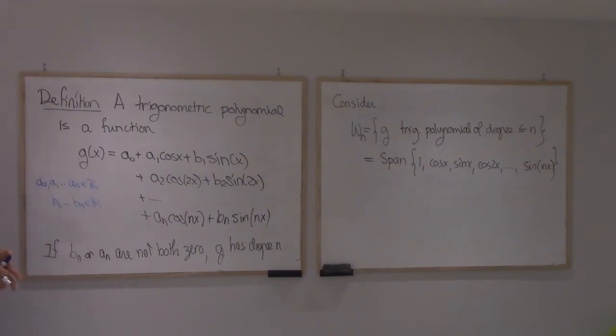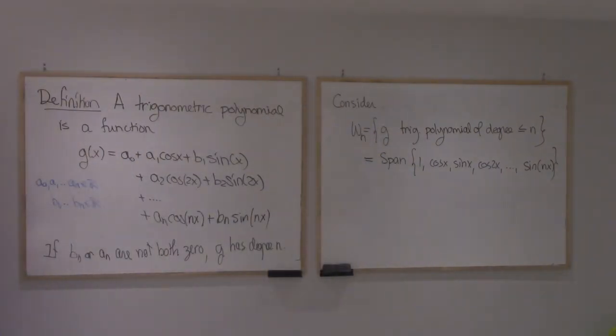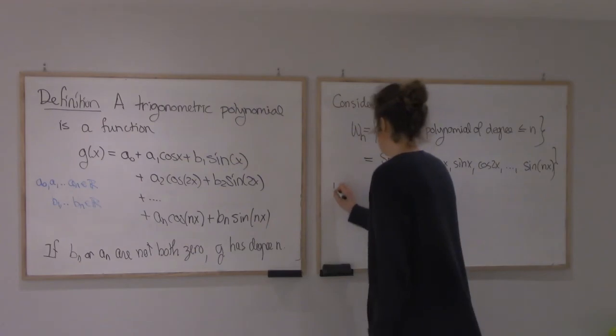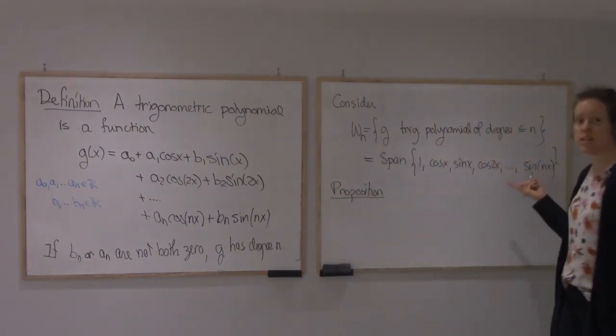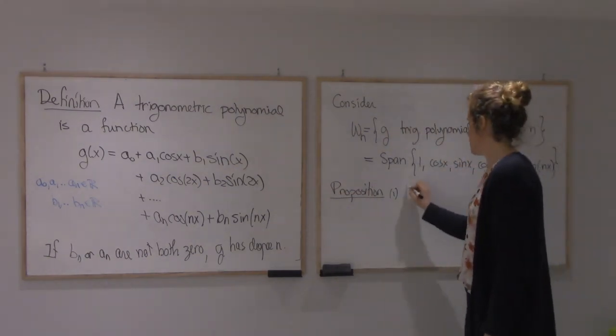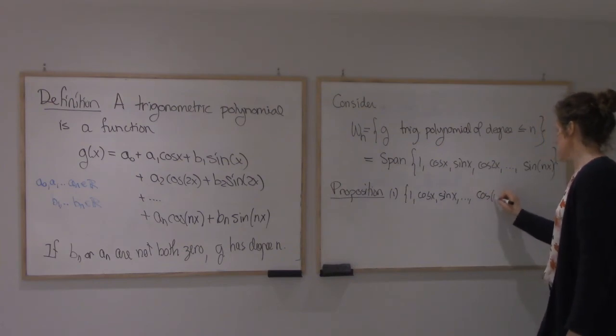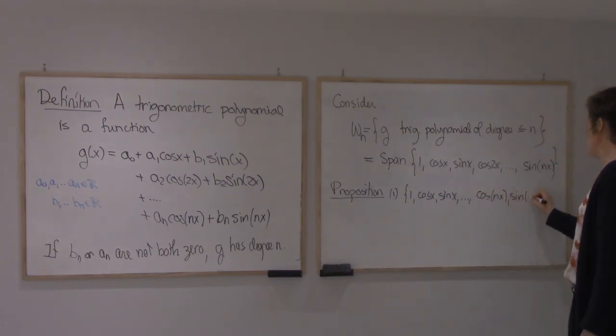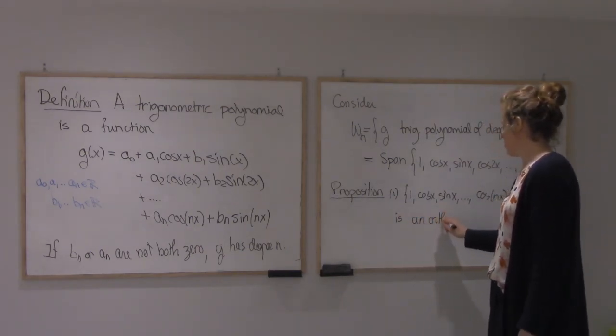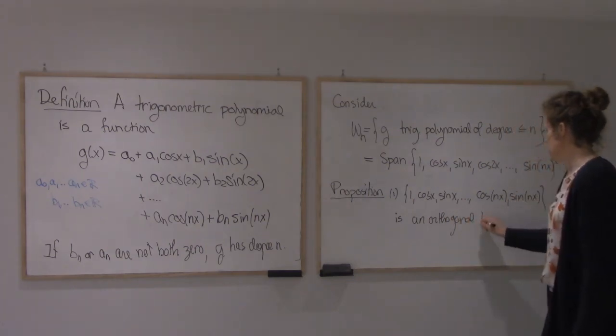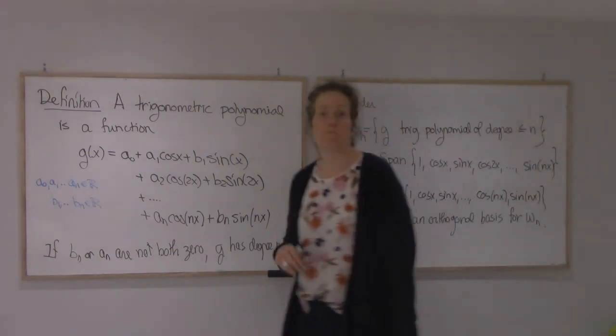To build projection, we need orthogonal bases. We're lucky in this case, we don't have to work hard. Turns out that this is actually an orthogonal basis. So 1, cos of x, sine of x, cos nx, sine nx. This is an orthogonal basis for Wn. We could use it to build projection.